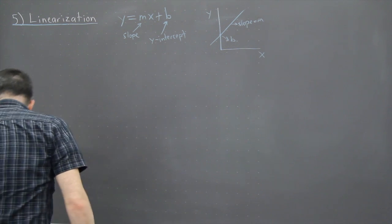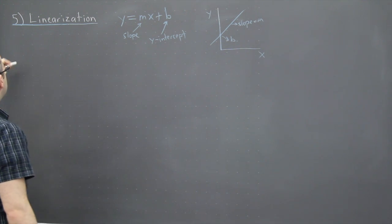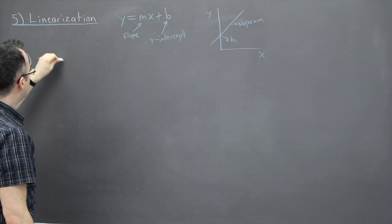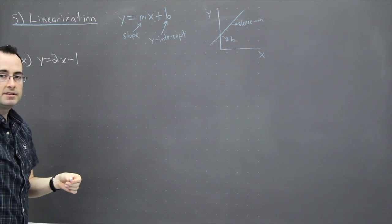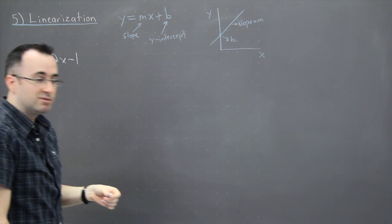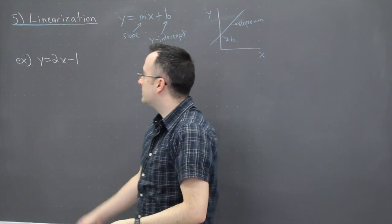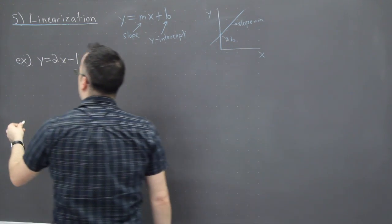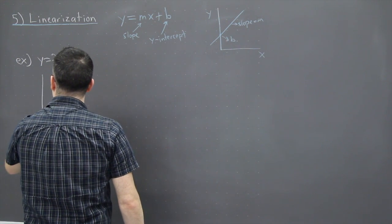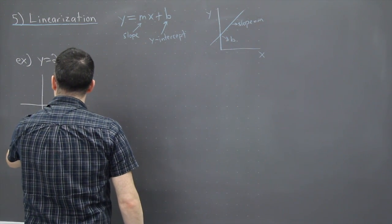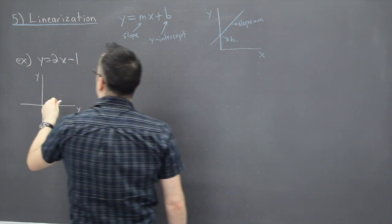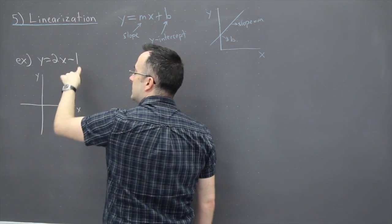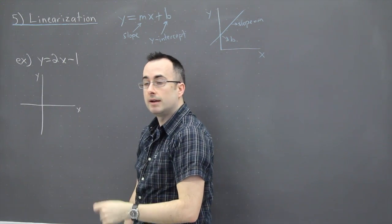Now I could give an example. Something like y equals 2x minus 1. This is a really simple example, but I think it bears doing quickly. If we want to graph this, we know that the slope is 2 and we know that the y-intercept is negative 1.